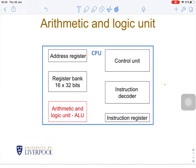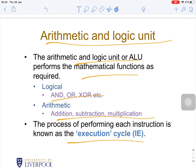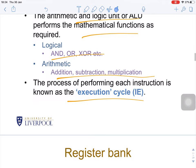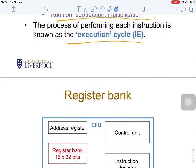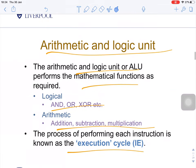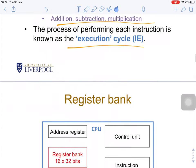The arithmetic logic unit (ALU) is where the calculations take place — including addition, subtraction, multiplication, and logical functions such as AND, OR, and XOR. The process of performing each instruction is known as the execution cycle. The execution cycle takes place in the ALU.